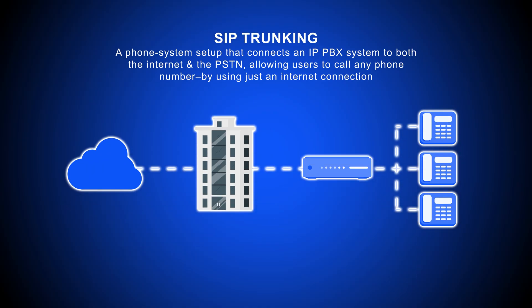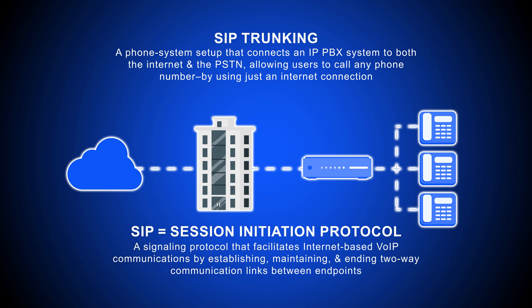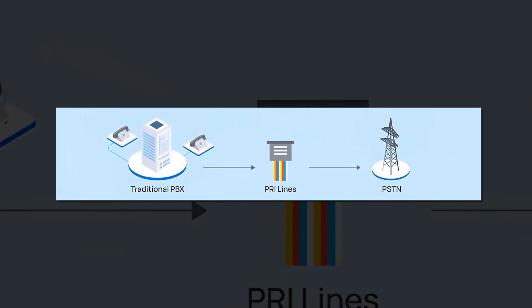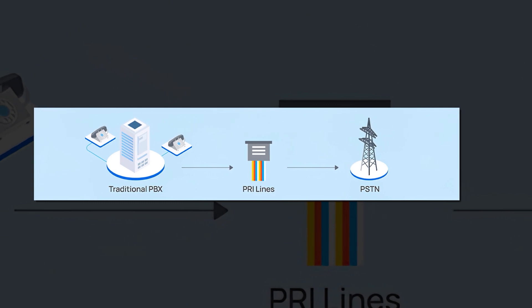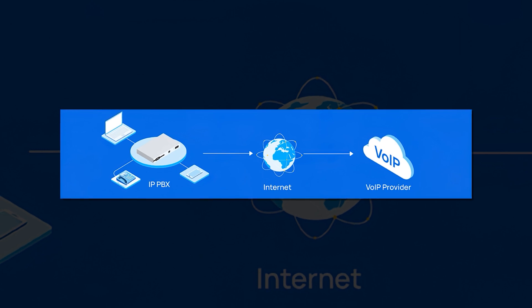SIP trunking is a phone system setup that connects an IP PBX system to both the internet and the PSTN, allowing users to call any phone number using just an internet connection. SIP is short for Session Initiation Protocol, which dictates the initiation and end of live data transfer sessions like VoIP. As such, SIP is a service that enables VoIP to occur, and SIP trunking bridges the gap between local internet calling on an IP PBX and non-local PSTN calling.